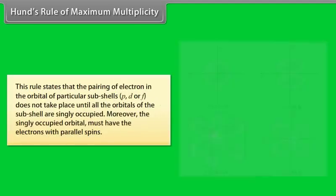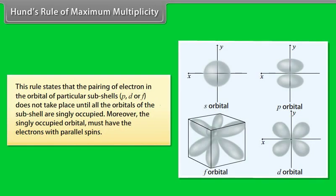Hund's Rule of Maximum Multiplicity states that the pairing of electrons in the orbitals of a particular subshell — P, D, or F — does not take place until all the orbitals of the subshell are singly occupied. Moreover, the singly occupied orbitals must have electrons with parallel spins.